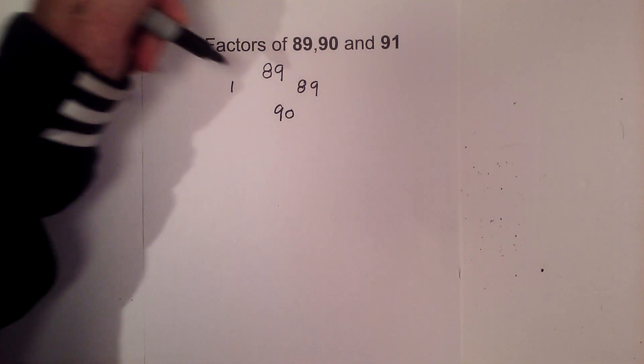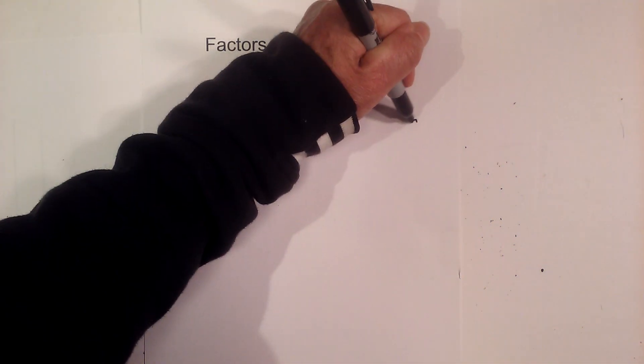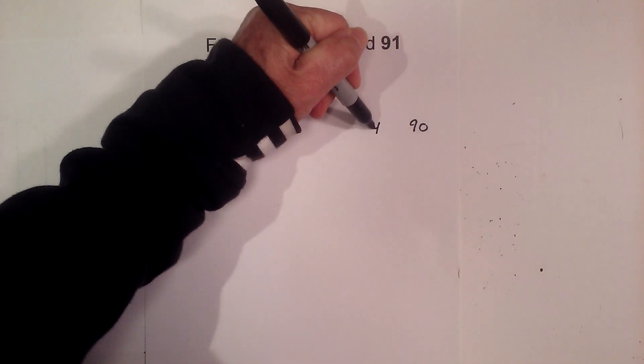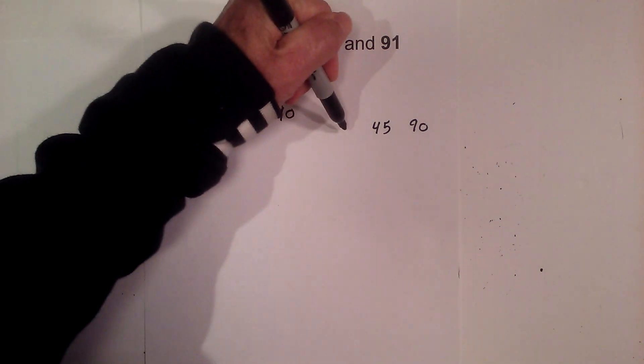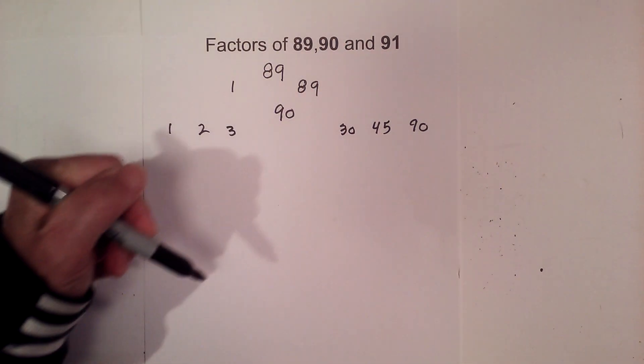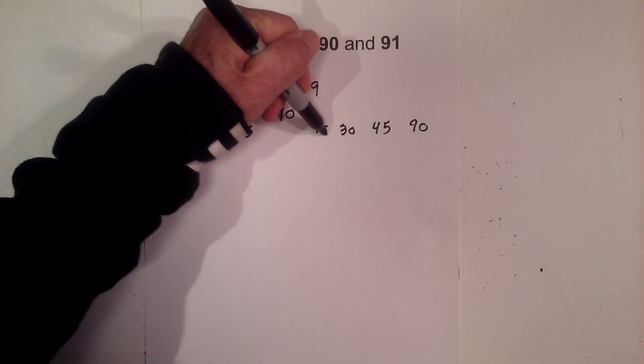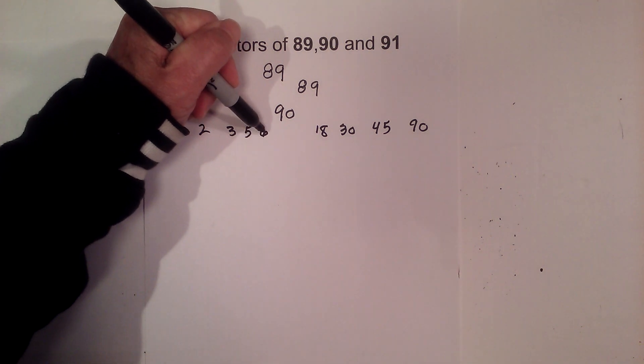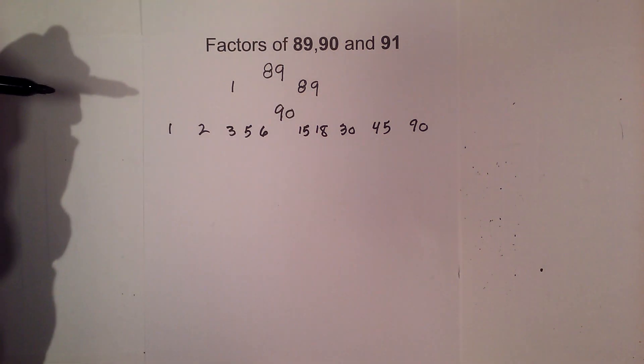Now with 90, I'd like to start with 1 times the number. 1 times 90 equals 90, then 2 times 45. Then we have 3 times 30, that equals 90. 4 will not go into 90, but 5 times 18 goes into 90. 6 times 15 equals 90, and then 9 times 10.